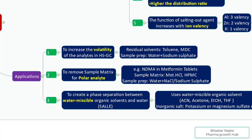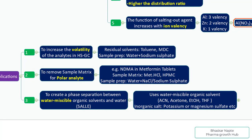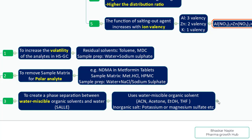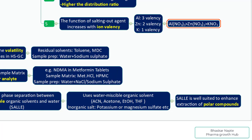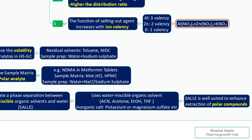Once you reach the required salting out concentration, you will see two immiscible phases and can easily extract your compound into the organic phase — whether acetonitrile, acetone, ethanol, or THF. This technique is very well used to increase the extraction efficiency of polar compounds. These are the few important applications of the salting out effect. Thank you very much for watching, and I will meet you soon with more informative and useful videos.